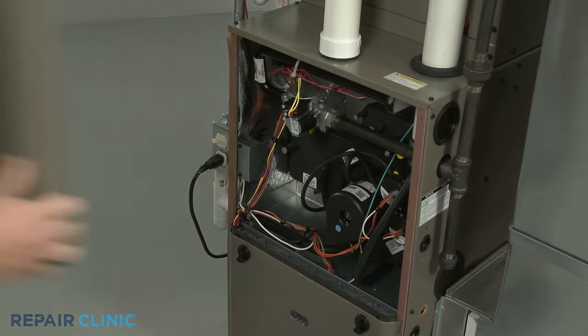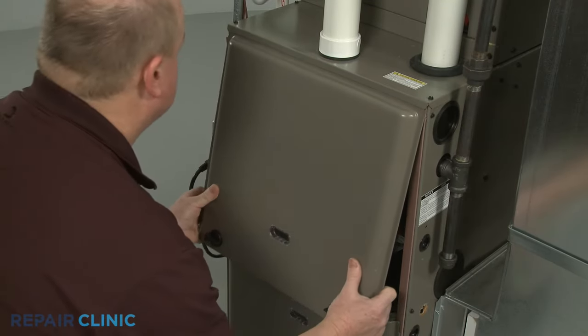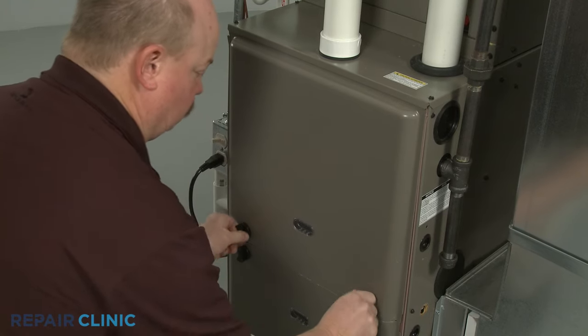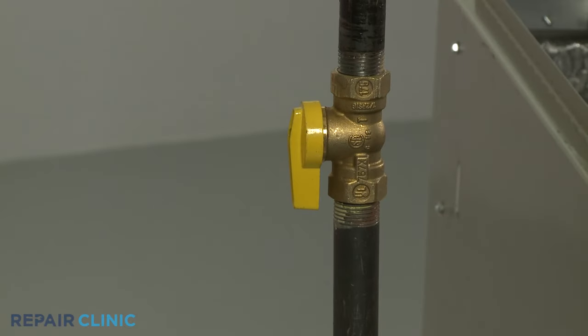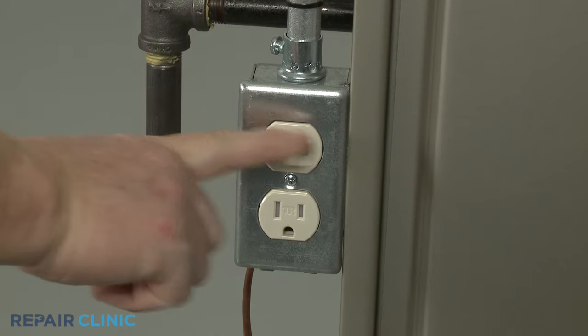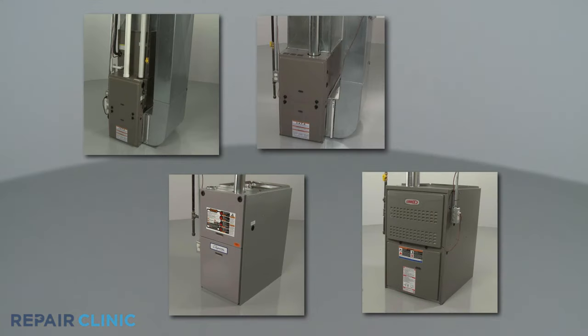With the new igniter installed, replace the access panel or panels. Turn the gas supply back on, as well as the power, and your furnace should be ready for use.